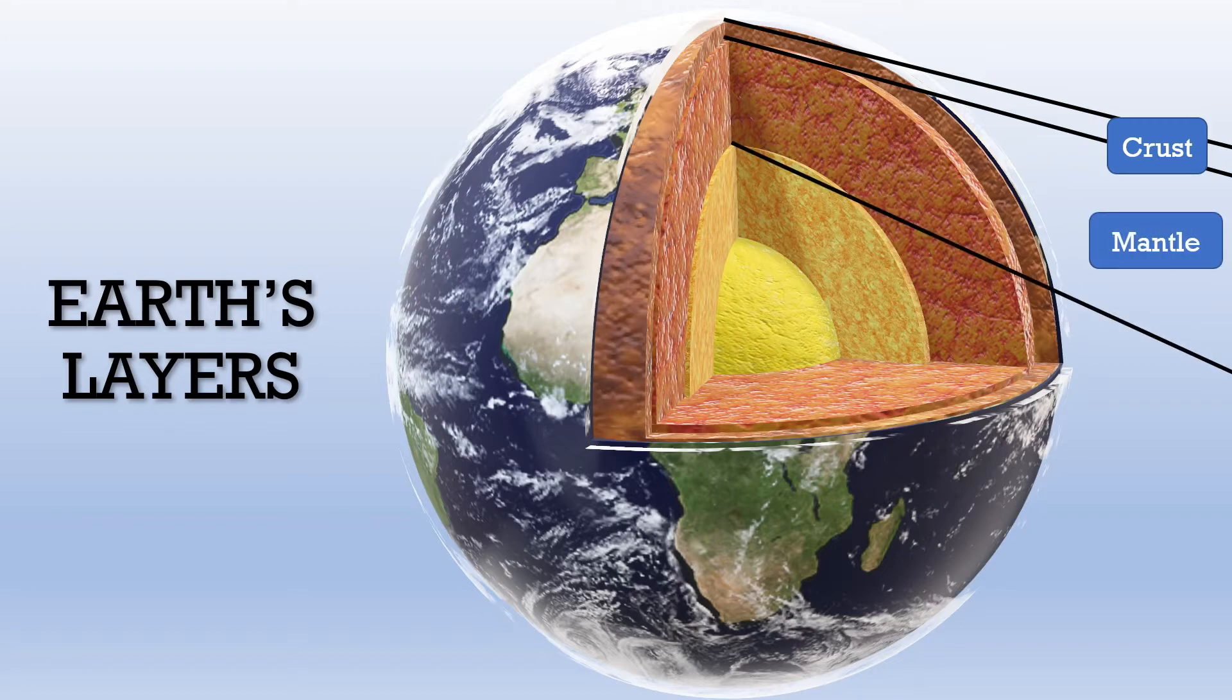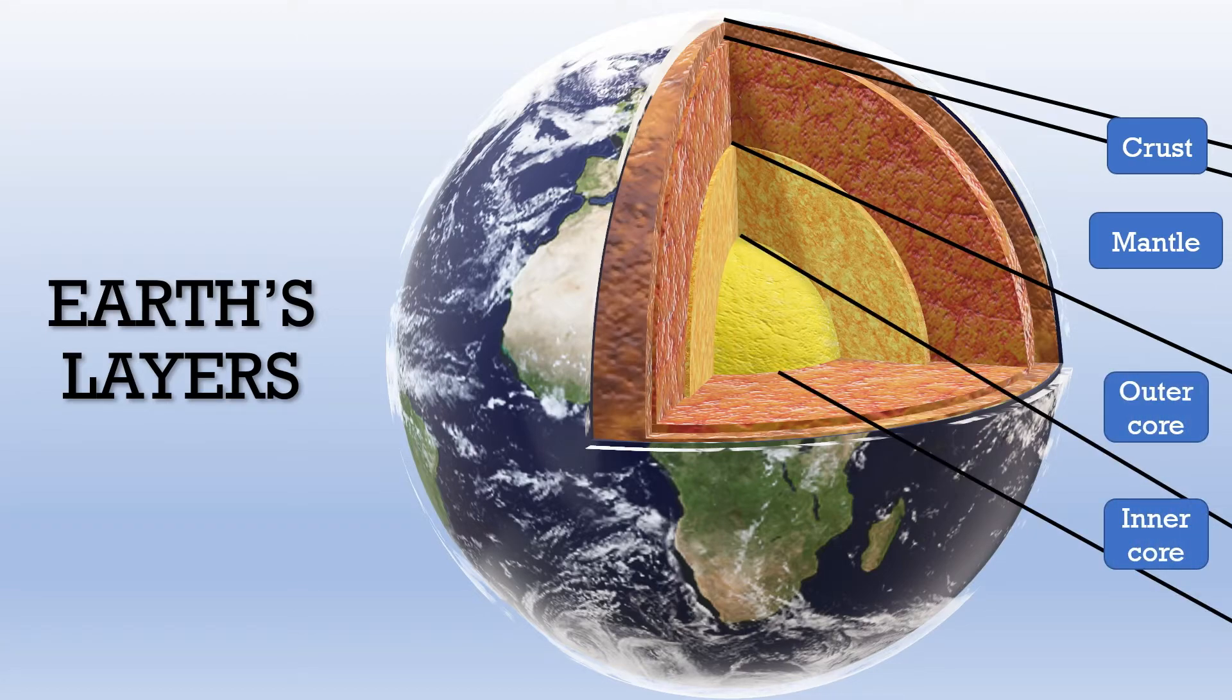Moving on, it's the second layer, the mantle. The mantle is actually formed from multiple layers that we will be learning soon. Let's just move on for now. Next up is the earth's core and the core is actually separated into the outer core as well as the inner core. It is actually the hottest part of the earth.